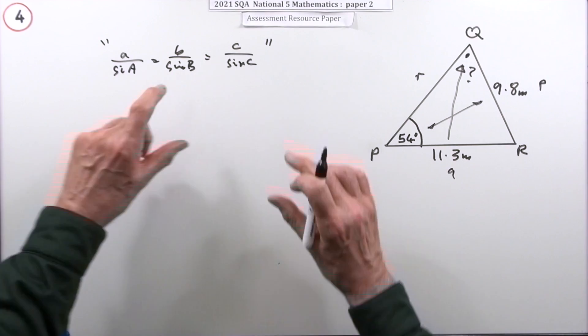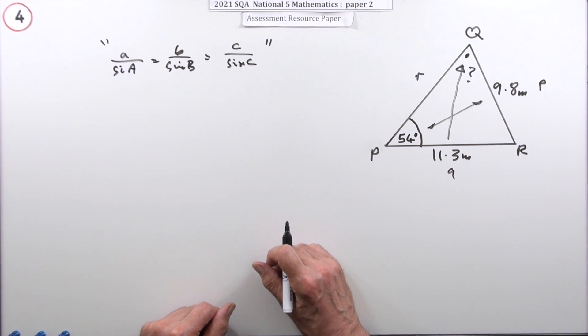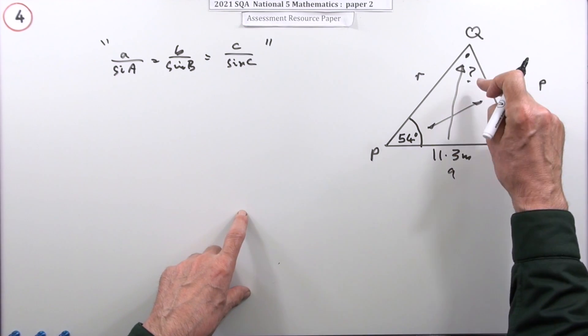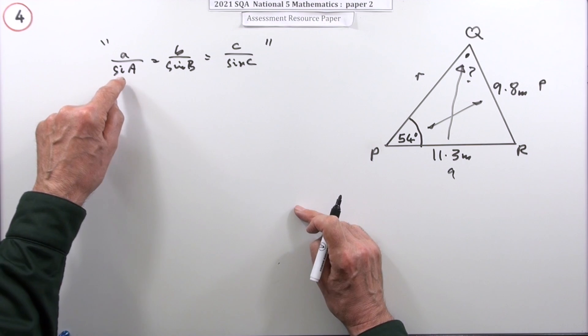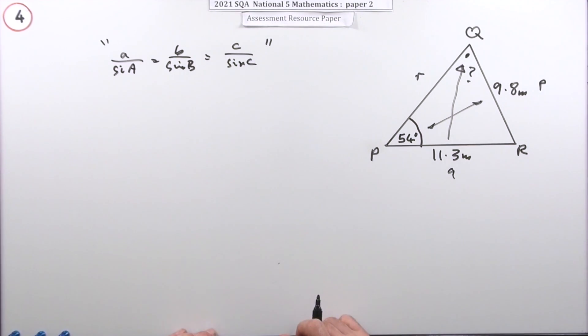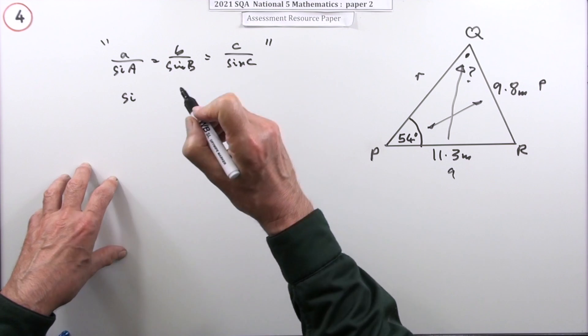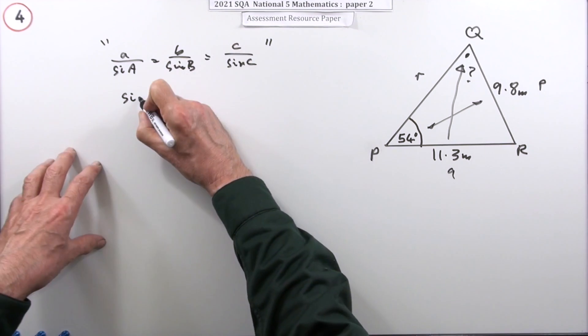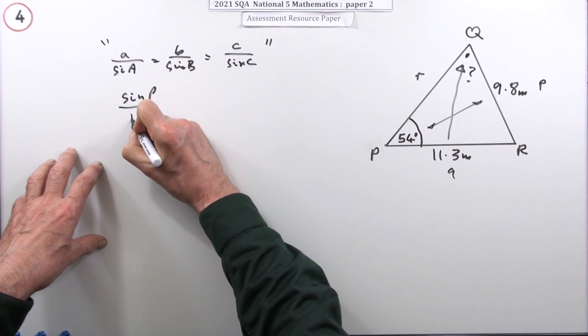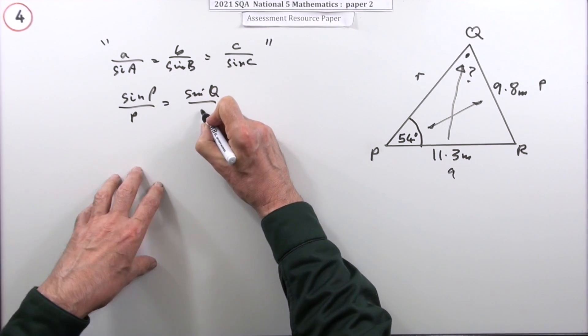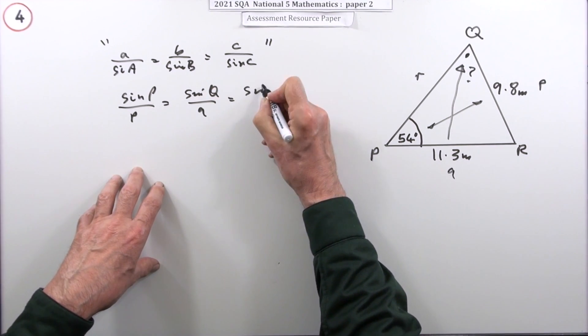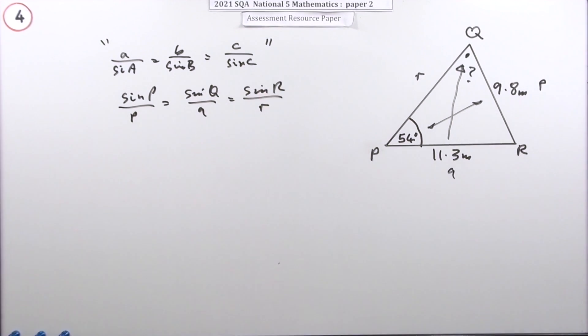If they're all equal to each other, so would the reciprocals be. So it'd be sensible to decide if you're going to be finding an angle, instead of writing it down this way, write it down upside down. So instead of putting Q over sine Q and so on over P, I'd put sine P over P. It's sine Q, just put it upside down, over Q. It's sine R over R.